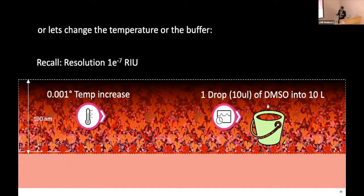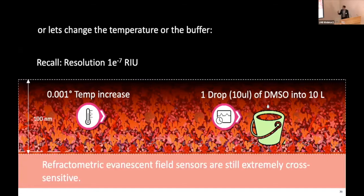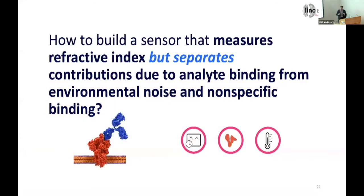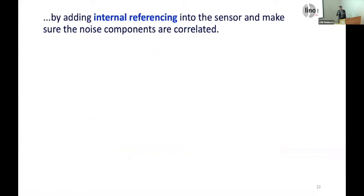Most biosensors nowadays are still extremely cross-sensitive. The question is: since we are measuring refractive index, is there a way to separate the contribution from analyte binding from all other changes — environmental noise and non-specific binding? Yes, there is: by adding internal referencing and making sure that the noise components of environmental noise are correlated.